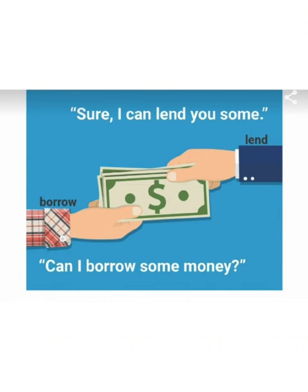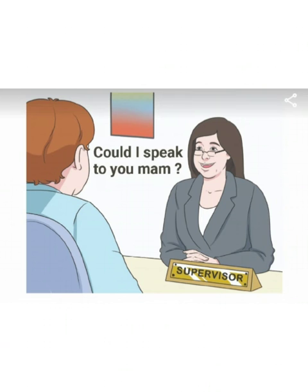Next example: Can I borrow some money? Here the modal auxiliary is can, and the function is that it is used to ask for permission. The response: Sure, I can lend you some. Here the modal auxiliary is can again, and the function is that it is used to give permission.